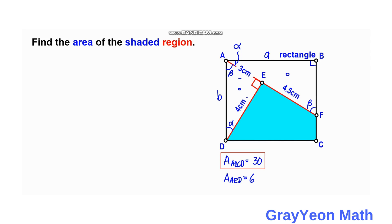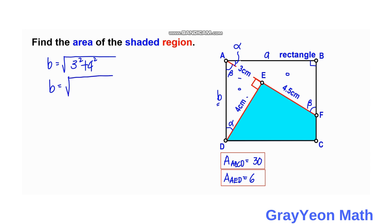Next, we compare the areas of the two right triangles ABF and AED. Before that, we need the value of B, the hypotenuse of triangle AED, which is still unknown. So B equals the square root of 3 squared plus 4 squared, which is the square root of 9 plus 16, equals the square root of 25, so B equals 5 units.